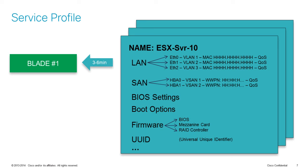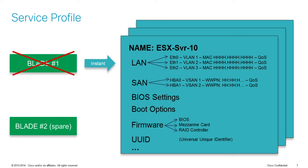The beauty of service profiles is that you can, at any point in time, disassociate that service profile. Say your blade is broken, a maintenance window is approaching, or perhaps you're switching to a new family of blades. You can instantly disassociate that service profile from the blade and move it to another one. The entire process again takes about three to six minutes, and you have effectively moved your workload to another blade — whether it's in the same chassis or a completely different chassis. Therefore, you gain unparalleled workload mobility.